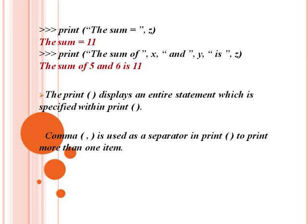We will use four methods in print functions. The print function displays all messages specified within it. Comma is used as a separator in print, to print more than one item. In the last example we saw string comma variable — using the comma operator.